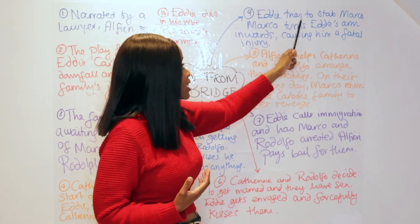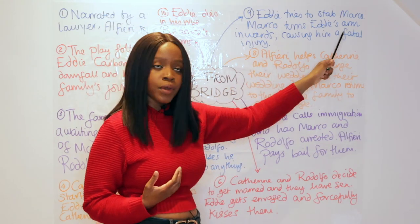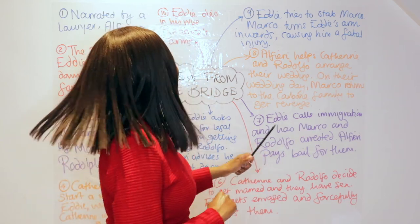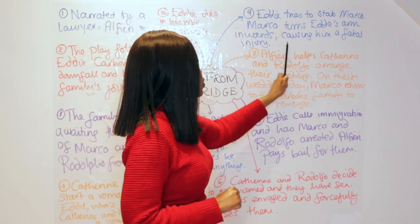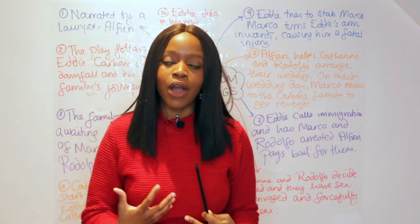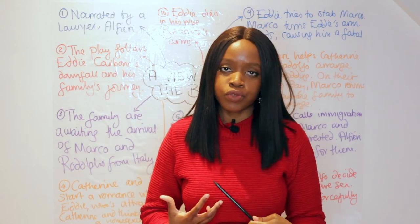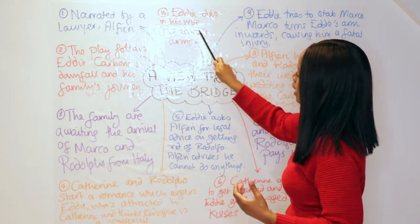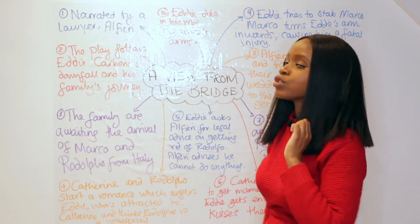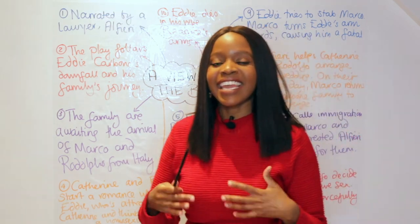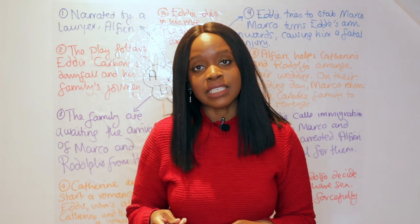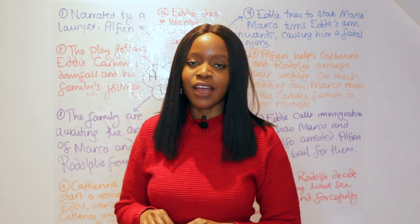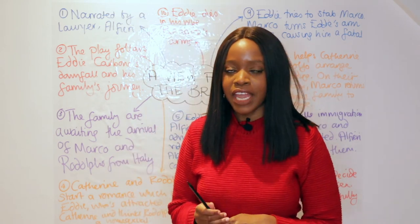There is a fight, and Eddie tries to stab Marco. However, Marco turns Eddie's arm on himself, causing Eddie to be killed by his own knife. He sustains a fatal injury and ends up dying in his wife Beatrice's arms — the same wife he had ignored in favour of his younger, more beautiful niece Catherine.